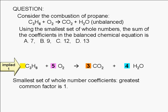So the sum of the coefficients is 1 plus 5 plus 3 plus 4, which equals 13. The correct answer is D, 13.